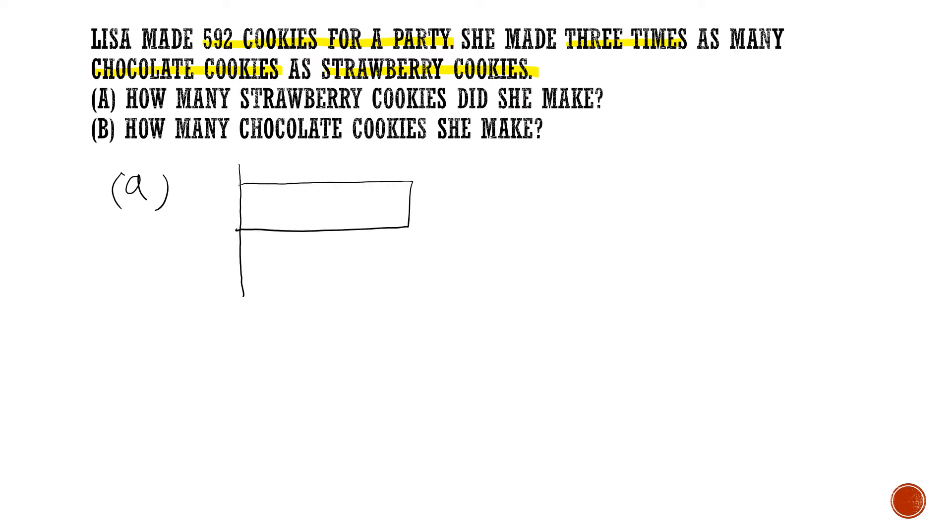Remember always make sure that your models are drawn as accurately as possible. So chocolate cookies 3 times, strawberry cookies, 1 unit. You have to label them. 1 unit, 1 unit each. And the total, 592. So, the method you've got to do is this. You're going to have to write 4U equals 592, because there are 4 units in total. So 1U equals to 592 divided by 4.